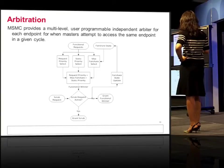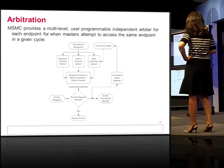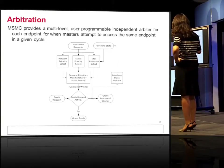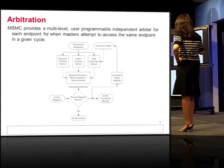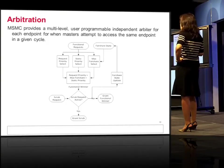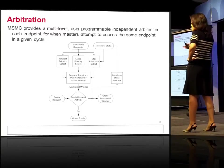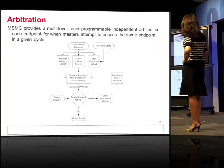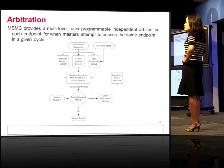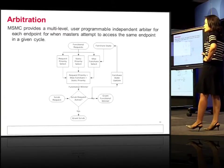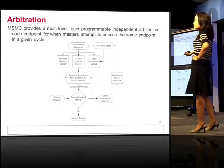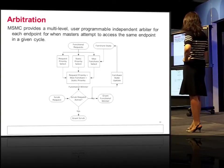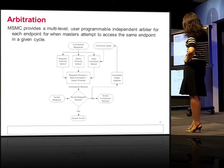This is the signature arbitration inside MISMIC — called multi-level user-programmable independent arbiter. In this diagram you can see three blocks: request priority selection, static priority, and fair share. When a request comes in, it brings a 3-bit encoded priority number that the system-level user can control. We respect that priority level and arbitrate accordingly. If requests are at the same priority level, we trigger fair share selection. There's also a scrubbing function: the RAM bank has ECC support with background scrubbing that periodically reads, corrects, and writes back data, requiring atomic read-modify-write cycles.